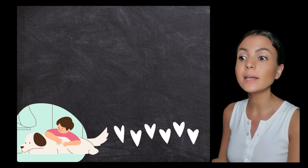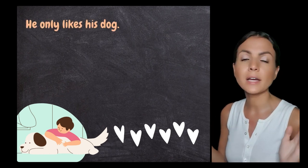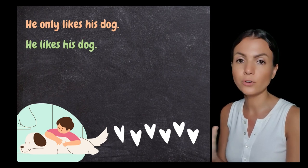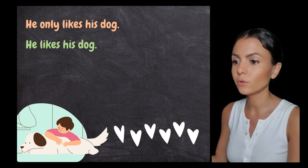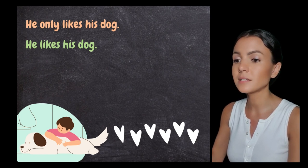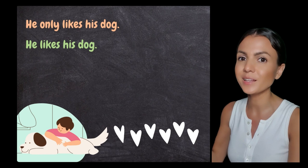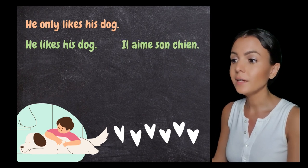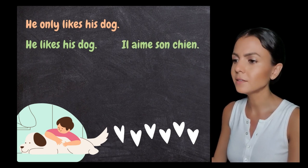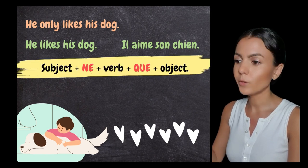Case number two. For example, you want to say 'he only likes his dog'. If it's difficult to put it together right away, you can start with the short affirmative version of the sentence. In our case: 'he likes his dog' — 'il aime son chien'. Easy, right?